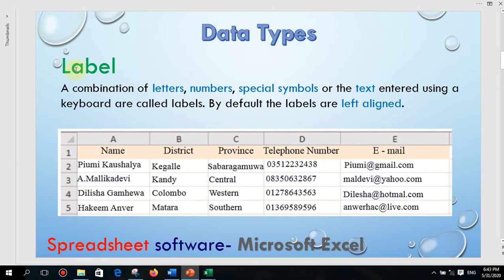Next we'll talk about labels. A combination of letters, numbers, special symbols, or text entered using a keyboard are called labels. You can see here we have typed some symbols and some text — all of these we can categorize as labels. By default, labels are aligned left. Even if you type numbers, symbols, or text, if that cell content is aligned left, it is categorized as a label. Basically, when you type text it will be aligned left.